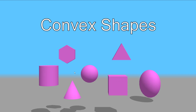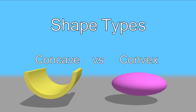A convex shape will only have one intersection — one entry point and one exit point. You can't draw a straight line that will have two intersections on these shapes. Examples of convex shapes include a circle, a triangle, a cube, and a cylinder. For all these shapes, if you draw a straight line there's only one point it will enter and one point it will exit. So these are the two shape types.